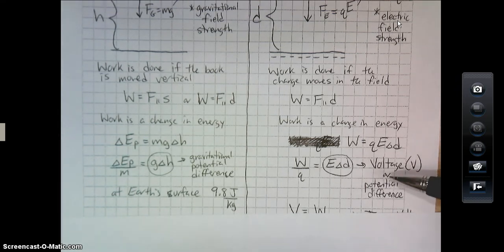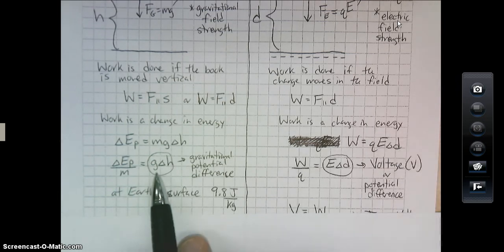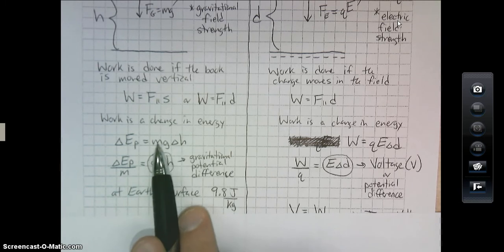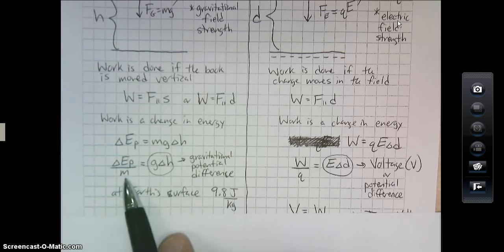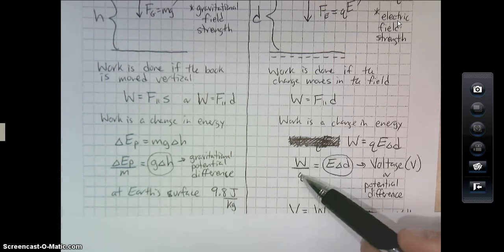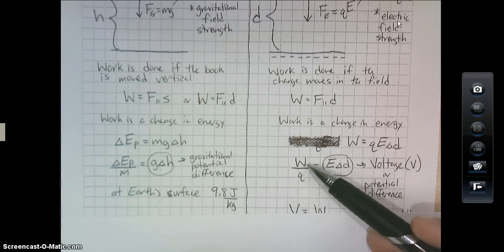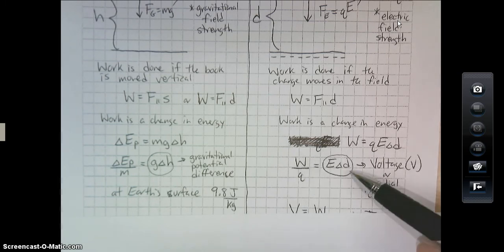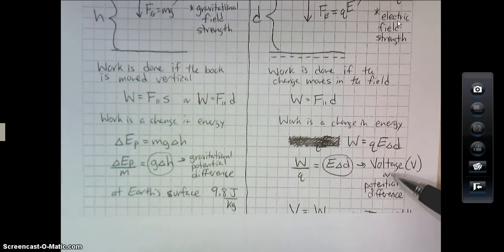Over here in the electrical side, if I rearrange this and bring the charge, which is very much analogous here to the mass, bringing that down, if I bring the charge down, I get work, joules, per charge, per coulomb. That, this electrical field times the distance between it, is referred to as the voltage, or the potential difference, or the electrical potential difference. That's what voltage is. It is the work per unit charge on an object.